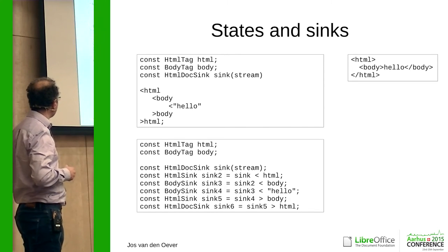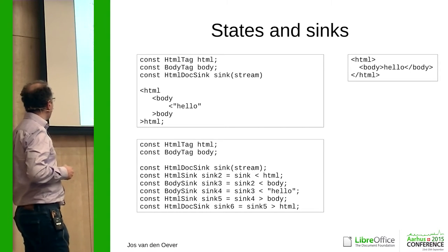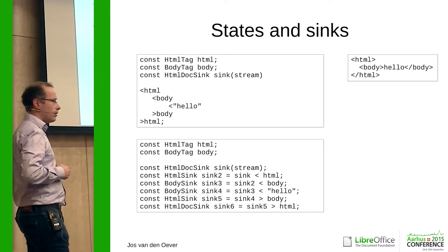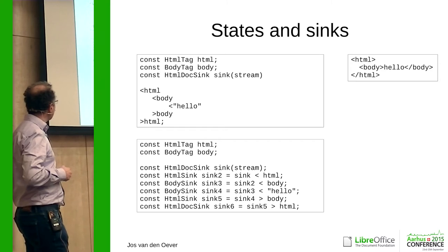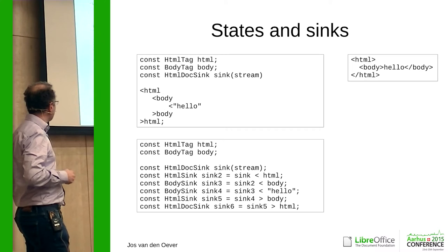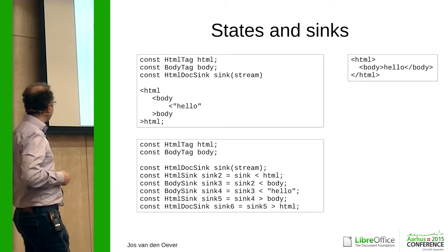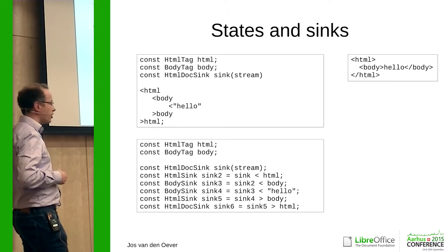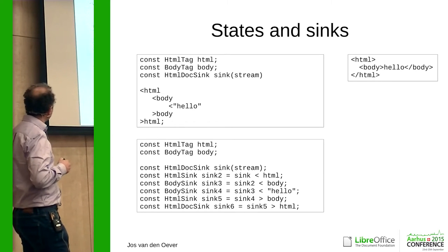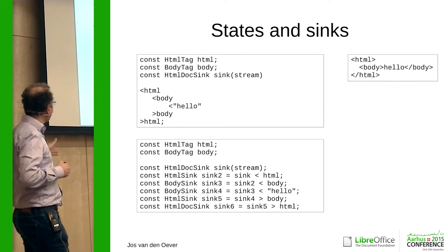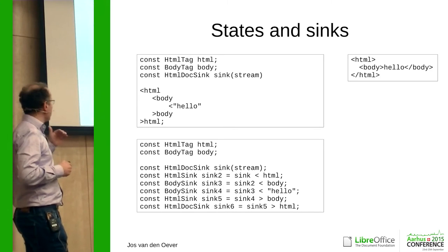So I start with the sink, then the HTML object goes into the sink, then the body goes into the sink, then the header stream goes in, and we close the body and the HTML. If I put the HTML into the sink, I get a second sink — an HTML sink. The HTML sink will only accept things that are allowed in there. So it will accept the body, but if I try to put an HTML inside the HTML, I will get a compile error. Each step changes the sink and puts type information in the sink, so that the compiler will check that all the nesting is valid.